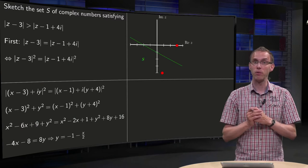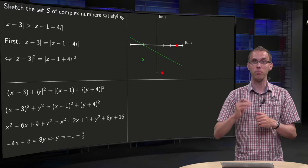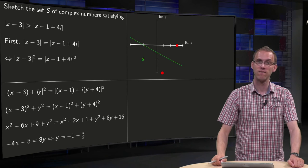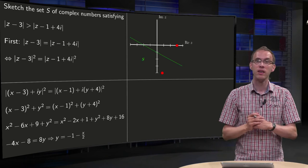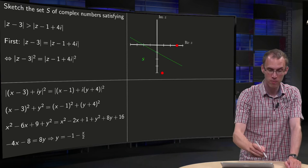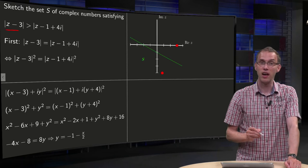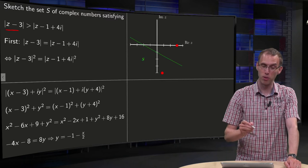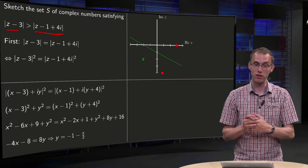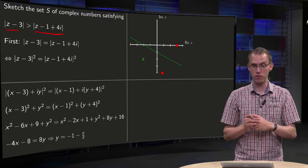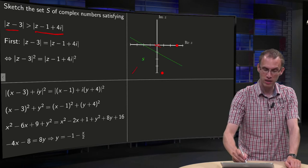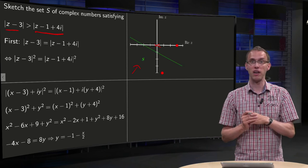Our region S will be on one of the sides of the line, but will it be on the upper or lower side? You can see that by plugging in z = 0: |0 - 3| = 3, and |-1 + 4i| = √17. 3 is not bigger than √17, so 0 is not in region S, and S should be on the lower part of the line.